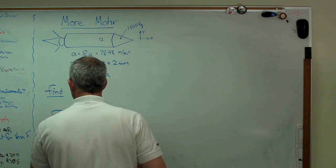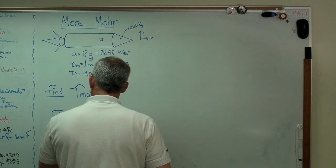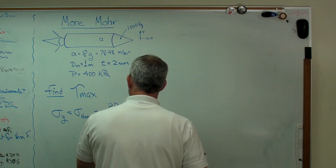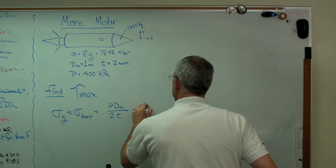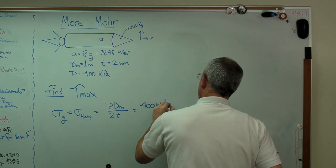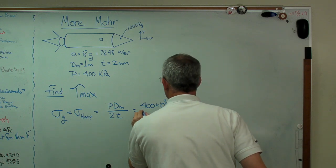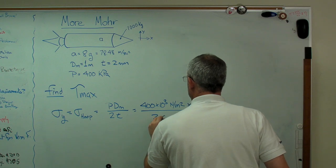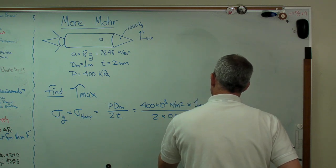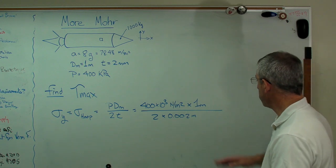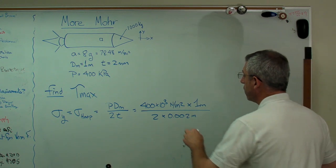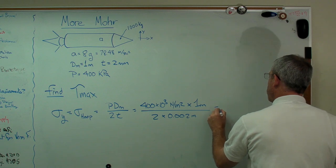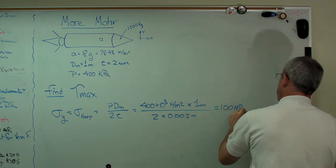Let's take a look at sigma y first, since that's the easiest. That's going to be the hoop stress, and that's Pdm over 2t, which for us is 400 kilopascals times 1 meter over 2 times 0.002 meters. It's good to keep your units consistent. I always mess up less often when I do that. It comes out 100 megapascals.